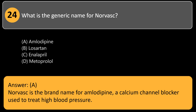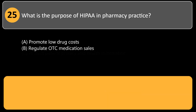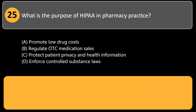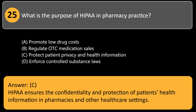What is the purpose of HIPAA in pharmacy practice? A) promote low drug costs, B) regulate OTC medication sales, C) protect patient privacy and health information, D) enforce controlled substance laws. Answer: C. HIPAA ensures the confidentiality and protection of patients' health information in pharmacies and other healthcare settings.